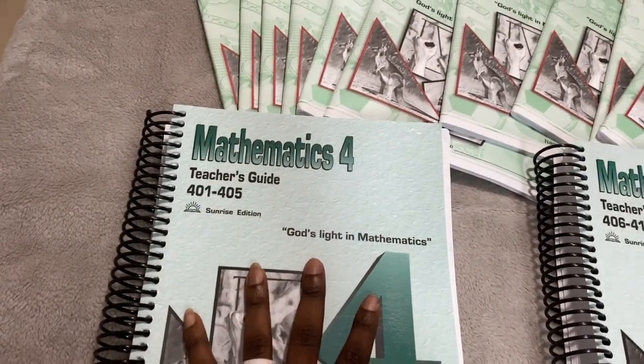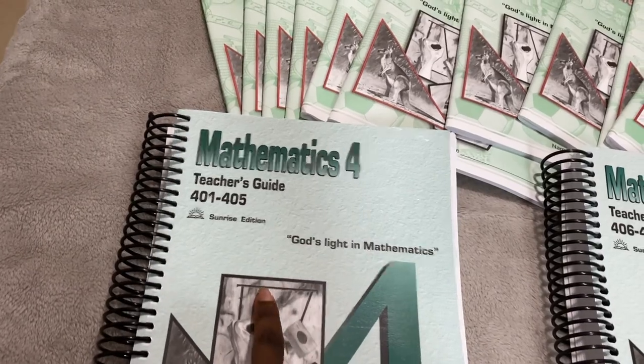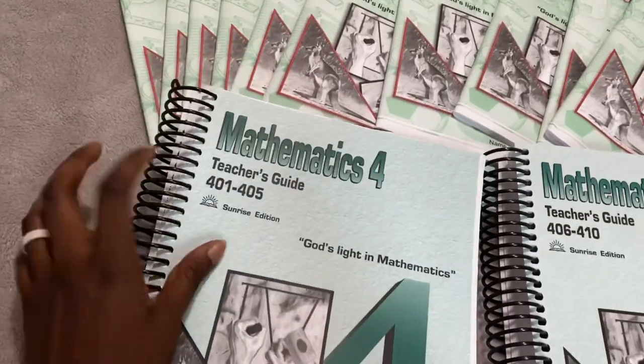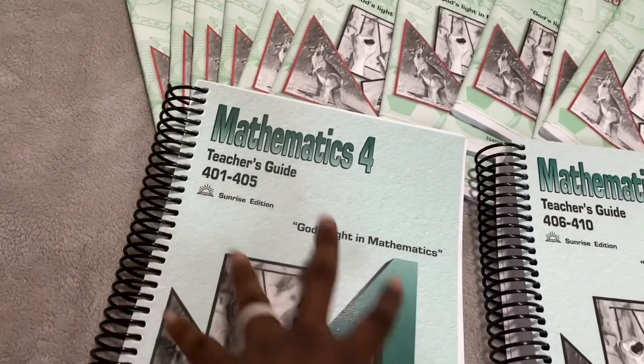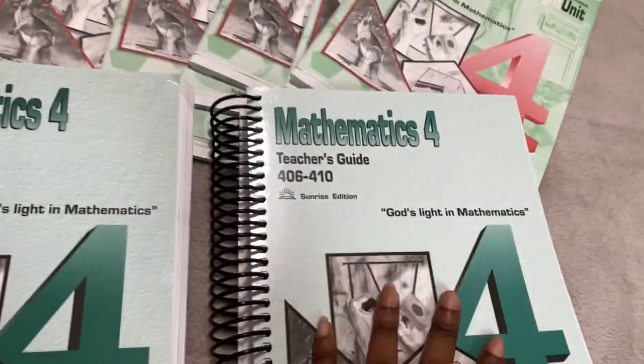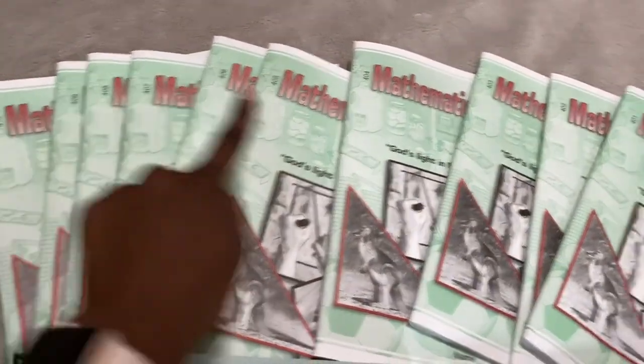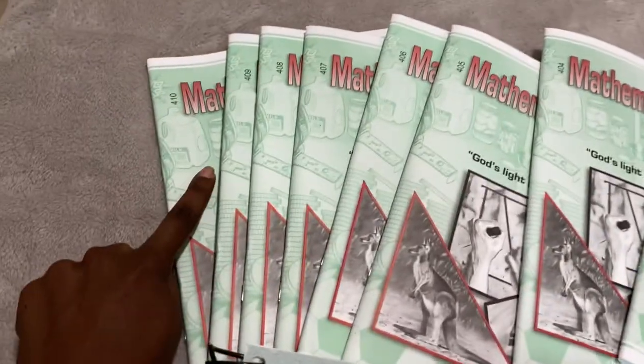This is Christian Light Education Mathematics 4. Mathematics 4 comes with two teacher's guides. It's 401 to 405 that's in this teacher's guide and 406 to 410 that's in this teacher's guide. It comes with 10 light units starting from 401 to 410.